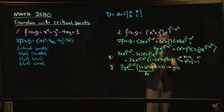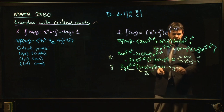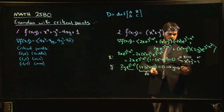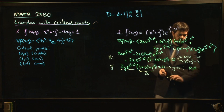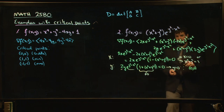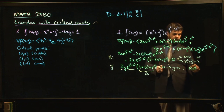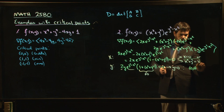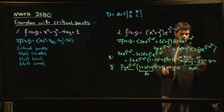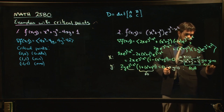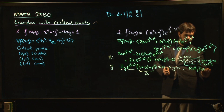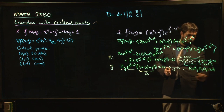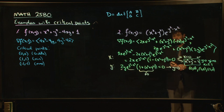So what critical points do we get? y must be zero. One option is the critical point (0, 0) — x is zero, y is zero. Another option: putting y = 0 into x²+y² = 1 gives x = ±1. So we get two other critical points: (1, 0) and (−1, 0). Three critical points in total.